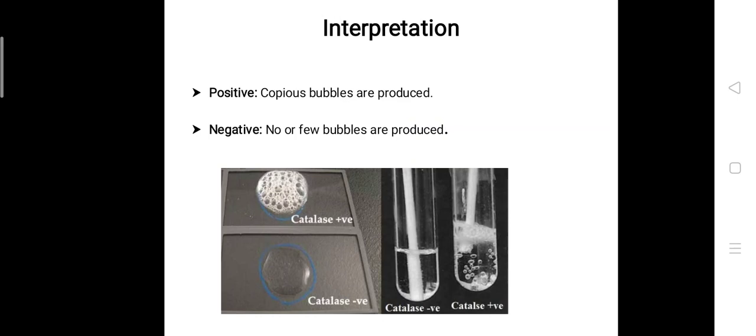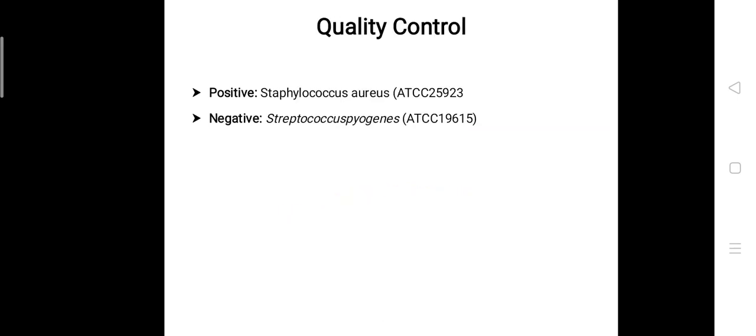Now let's see the quality control. Quality control is a system of maintaining standards in manufactured products by testing a sample of the output against the specification.